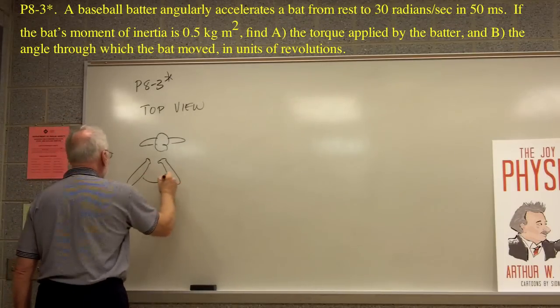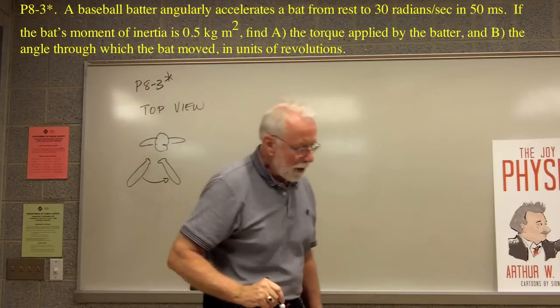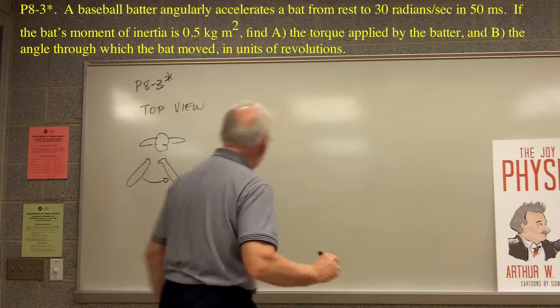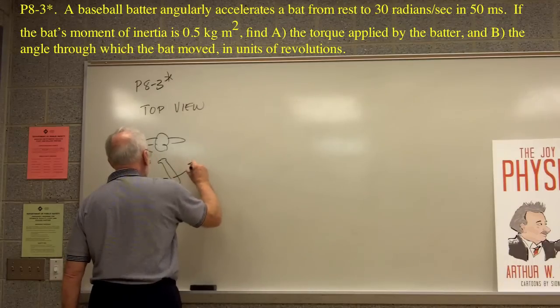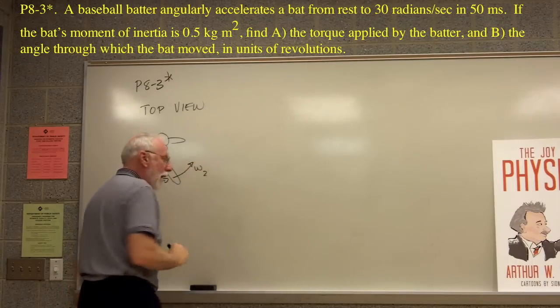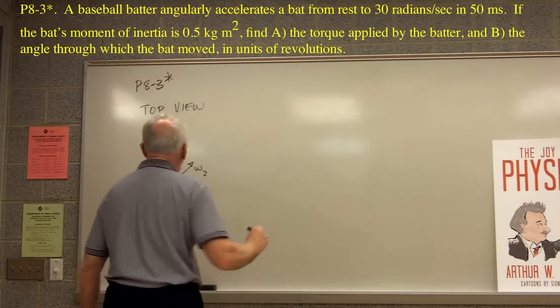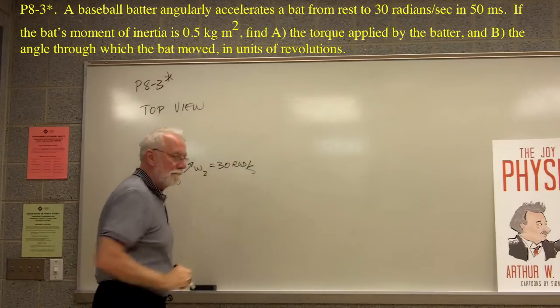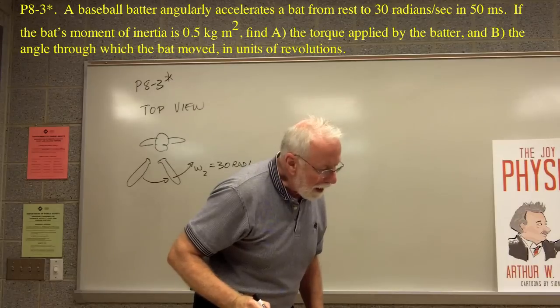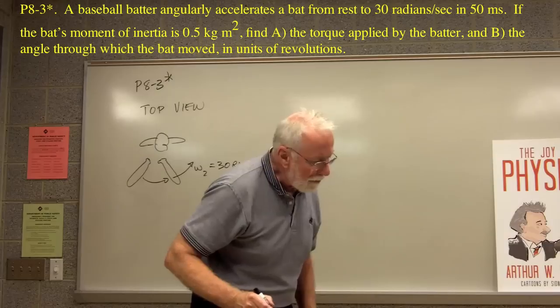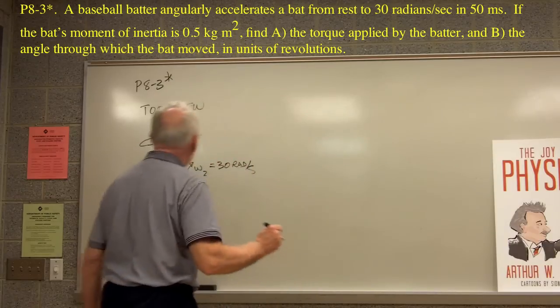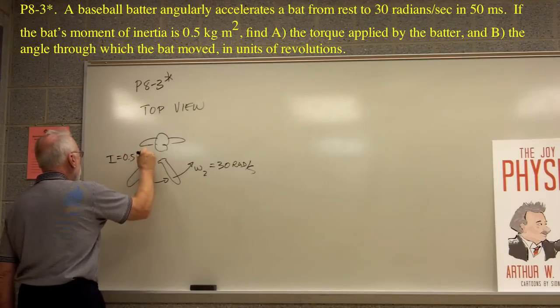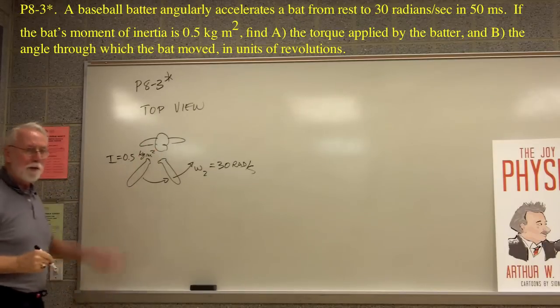So here's the bat being swung. Great. So what do we know about this? We know it starts from rest, and we know that when it finally reaches the end of the swing, then there's an omega here, and this omega is one which it says is 30 radians per second. Great.